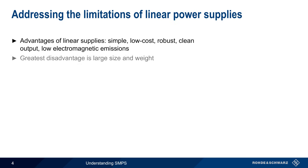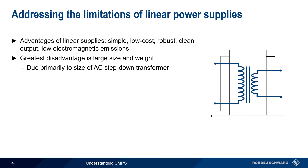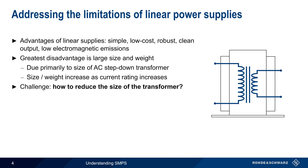The greatest disadvantage of these supplies is, however, their large size and weight. This is primarily due to the size of the AC mains step-down transformer, and this becomes a greater issue as the power supply current rating increases. One challenge, therefore, is to find a way of reducing the size of the transformer. The size of transformers decreases as the frequency of operation increases.